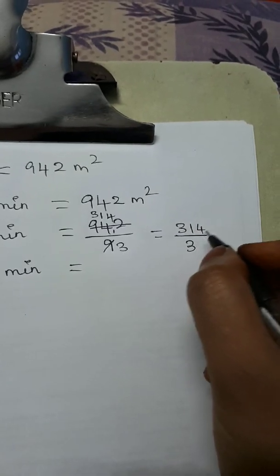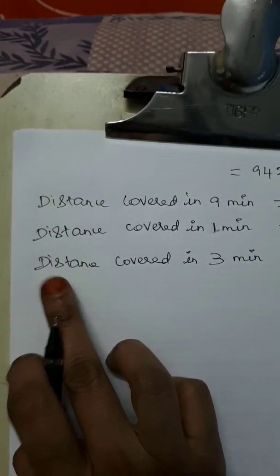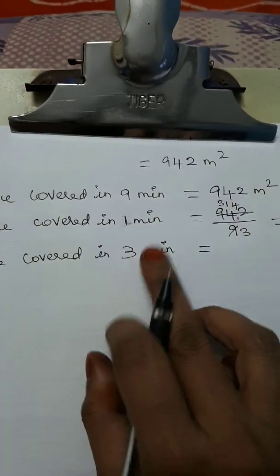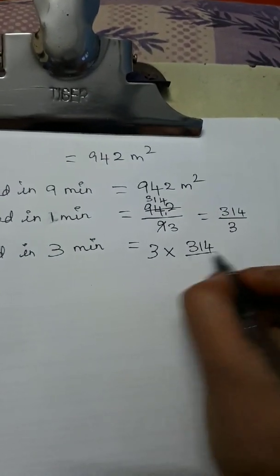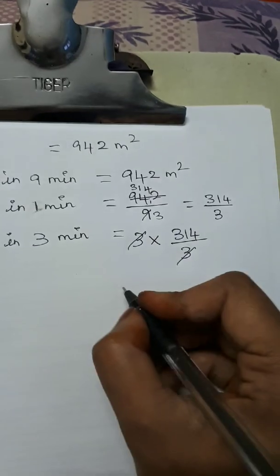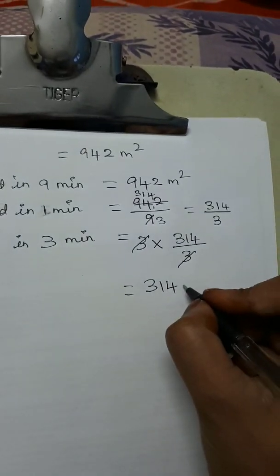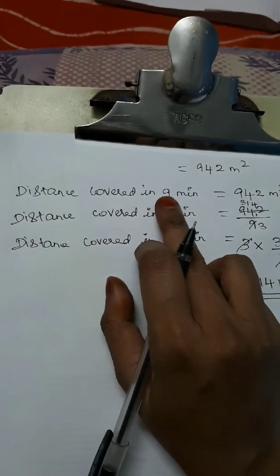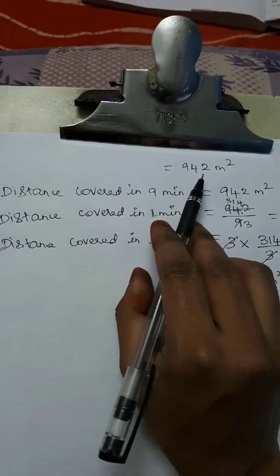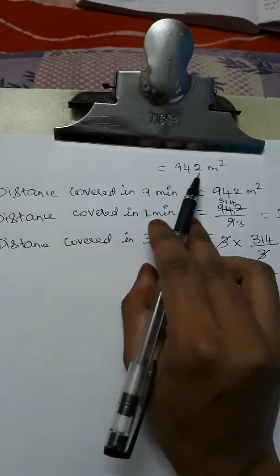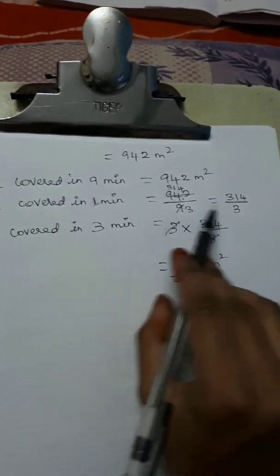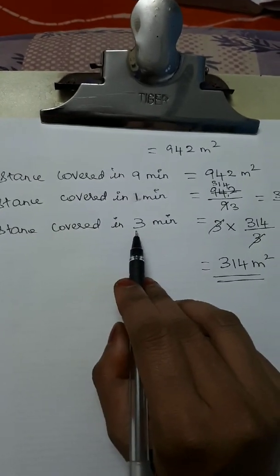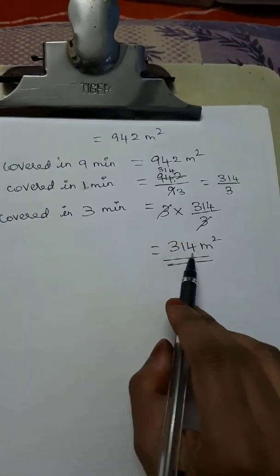Distance covered in 3 minutes = (314/3) × 3 = 314 meters. So the person covers 314 meters in 3 minutes.